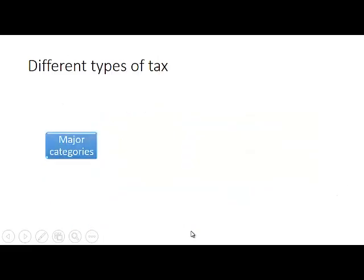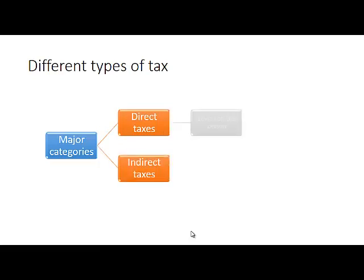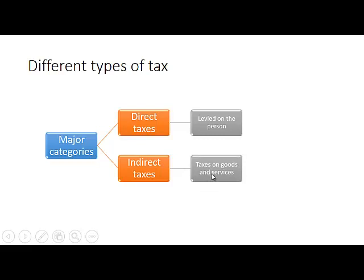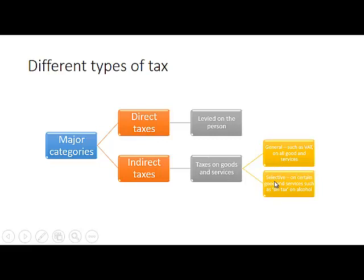Let's look at different types of taxes. The major categories are direct taxes and indirect taxes. Direct taxes are levied on a person — for example, income tax — while indirect taxes are levied on goods and services. We get general indirect taxes such as VAT, which are levied on all goods and services, and selective indirect taxes, which are only levied on certain goods and services, for example the sin tax on alcohol.